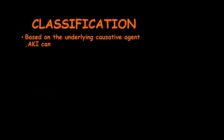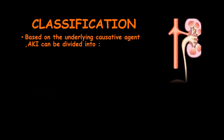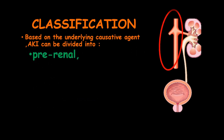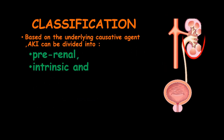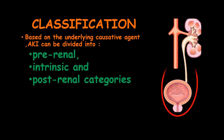Acute kidney injury can be classified according to the underlying causative agent into three classes: pre-renal, intrinsic, and post-renal categories.